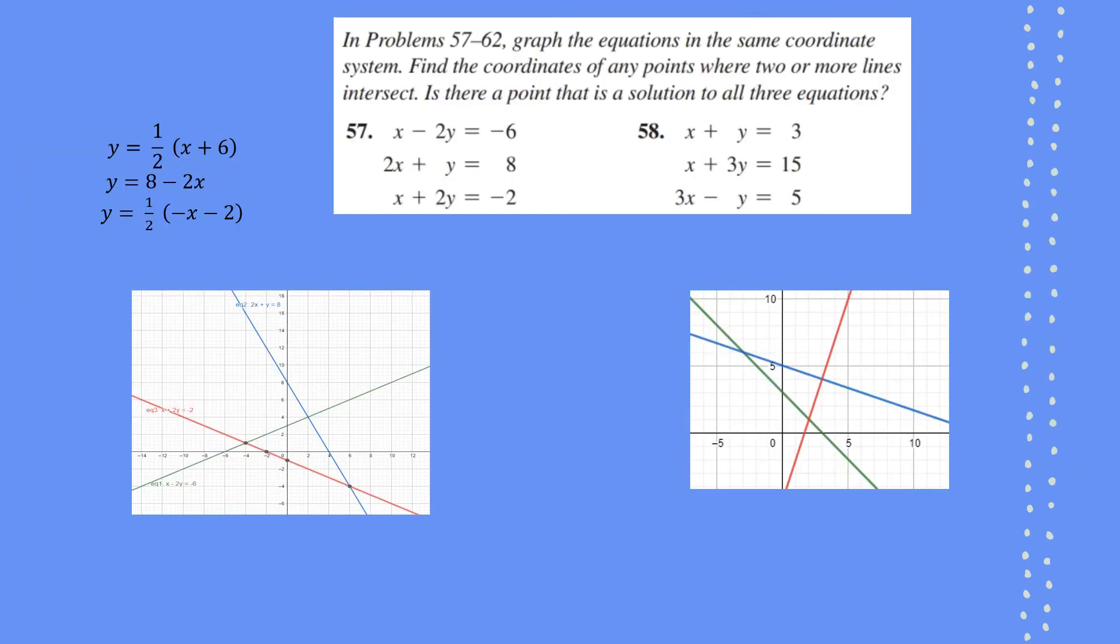In these equations 57 and 62, we have to graph the equations in the same coordinate system and find the coordinates of any point where two or more lines intersect. Is there a point that is a solution to all three equations? Like in the previous case, we can also graph all these equations by getting y value.